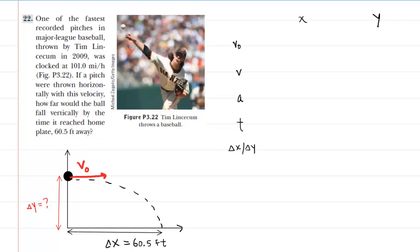In this question, we have a baseball pitcher throwing a ball horizontally. It's very important to note that the ball is being thrown horizontally, and therefore we have drawn an initial velocity vector pointing horizontally to the right. He's throwing the ball with a speed of 101 miles per hour. The ball is going to travel forward and land 60 and a half feet away, so we label the horizontal displacement as 60.5 feet. The question asks us to figure out how far the ball will drop vertically — in essence, we need to calculate delta y.